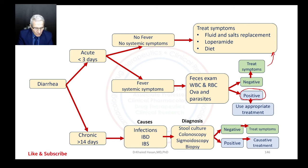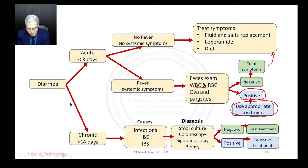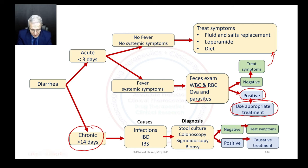If the stool culture is positive — showing parasites, white blood cells, or red blood cells — we start with the appropriate treatment targeting the disease or its cause. If the patient has had diarrhea for more than 14 days, it is classified as chronic diarrhea.